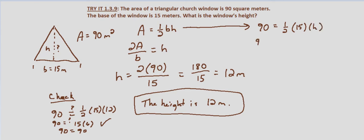So 90 equals 15 halves times the height. We multiply both sides by the reciprocal 2 fifteenths. And 90 times 2 is 180 divided by 15.